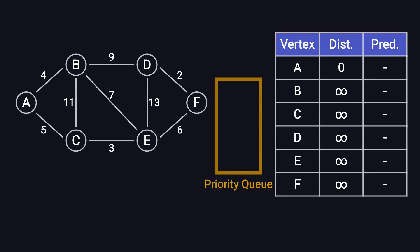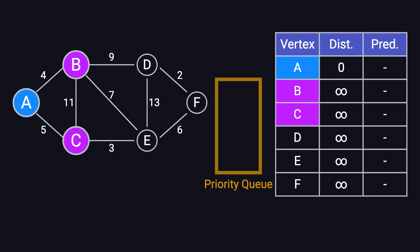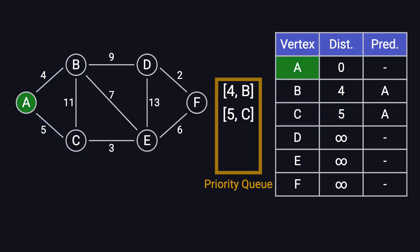Now, let's walk through Dijkstra's algorithm step by step to see how it works in action. We start at node A, adding it to the priority queue with a distance of zero. The queue now contains zero A. Next, we extract A and examine its neighbors. A is connected to B with a distance of four and to C with a distance of five. Since these are the first known paths to B and C, we update their shortest distances and set A as their predecessor. We then push 4B and 5C into the queue. Finally, we mark A as processed.